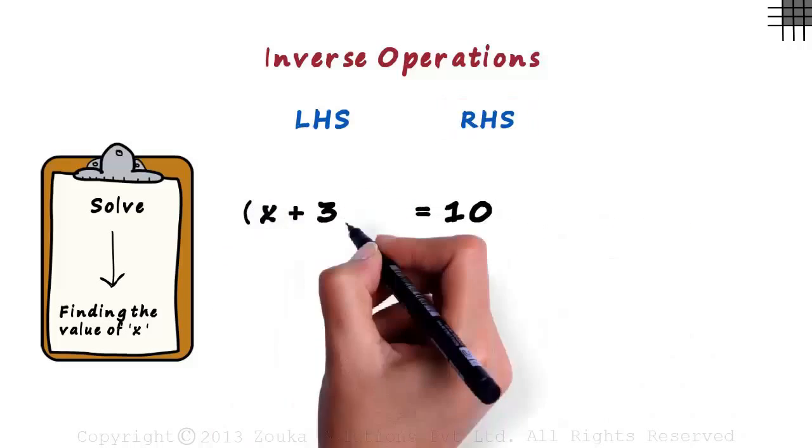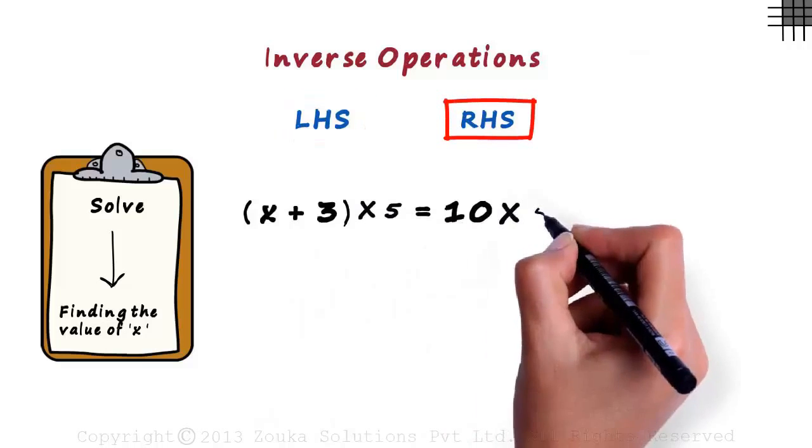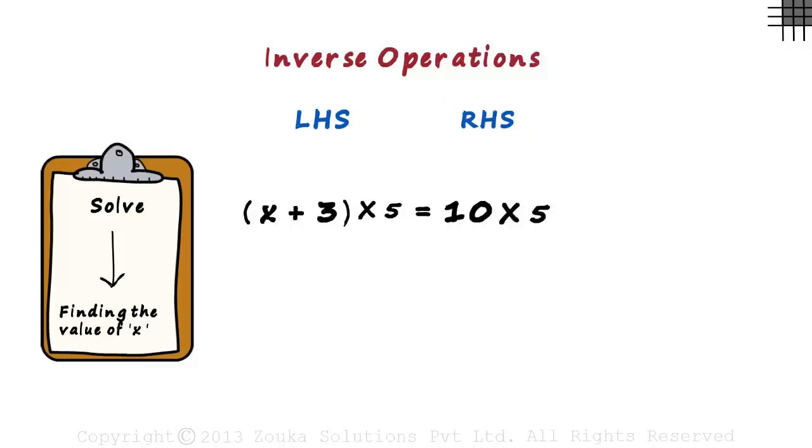If we multiply the left-hand side by the number, we have to multiply the right-hand side by the same number. But remember, we have to multiply the entire side. By putting these brackets here, it means that we multiply the entire left-hand side by 5.